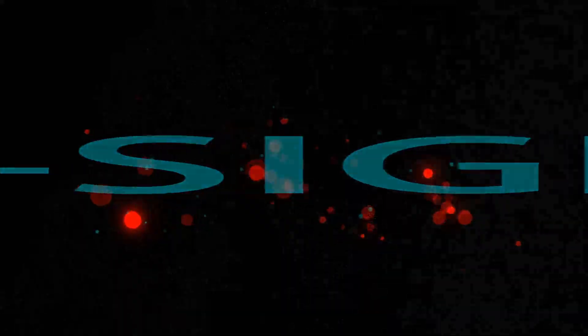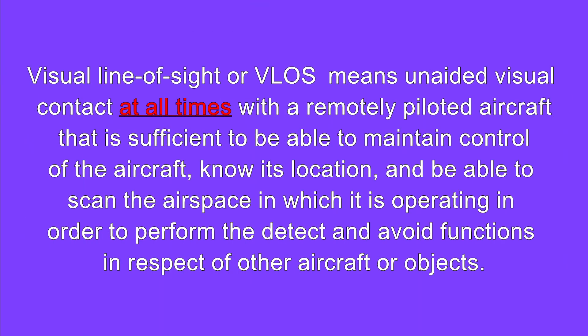I believe that there's a problem with this rule, and in this video I'm going to talk about what I think is the issue. On the Transport Canada website, the rule is defined as: visual line of sight or VLOS means unaided visual contact at all times with a remotely piloted aircraft that is sufficient to maintain control of the aircraft, know its location, and scan the airspace to perform the detect and avoid functions in respect of other aircraft or objects.